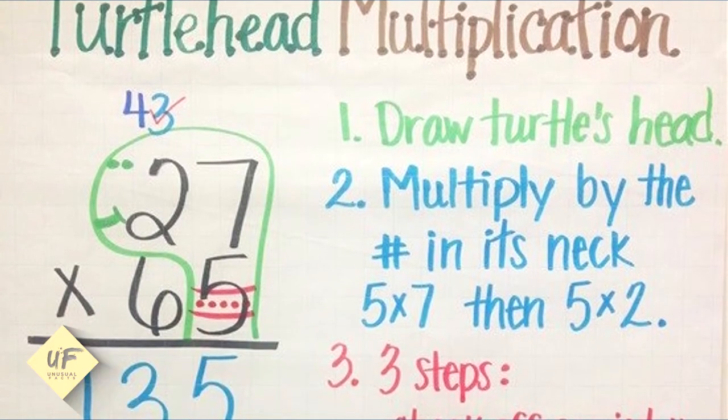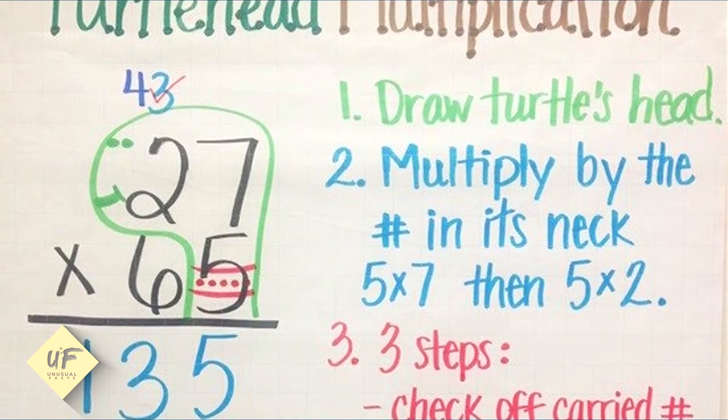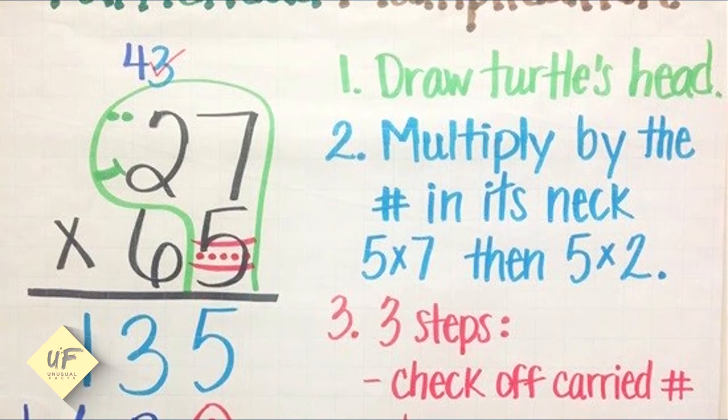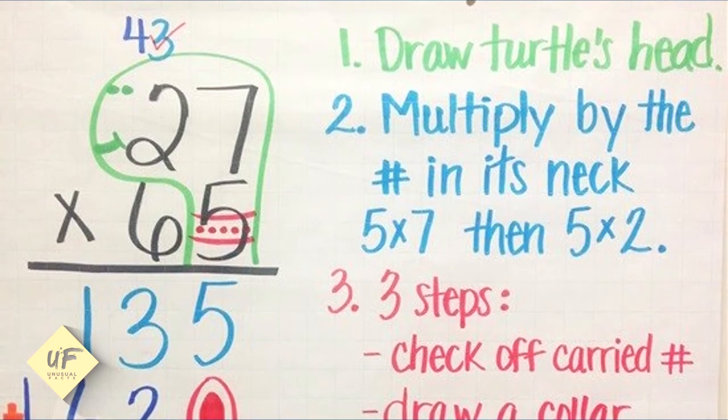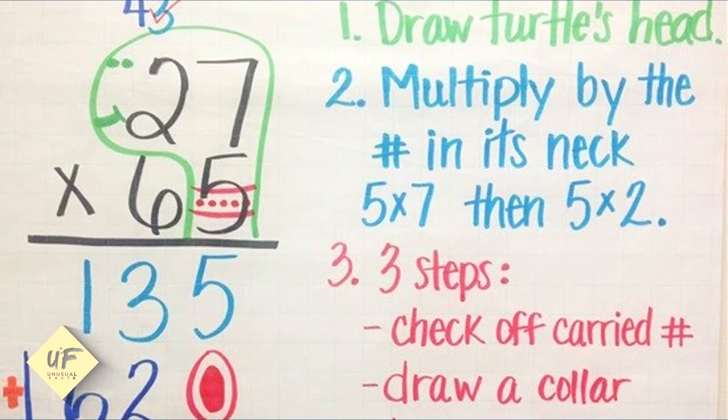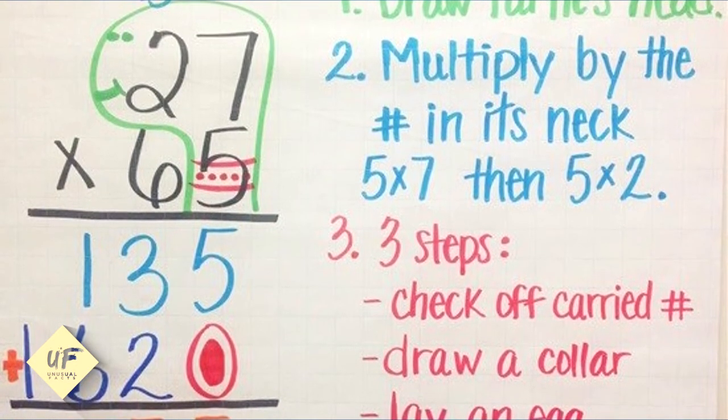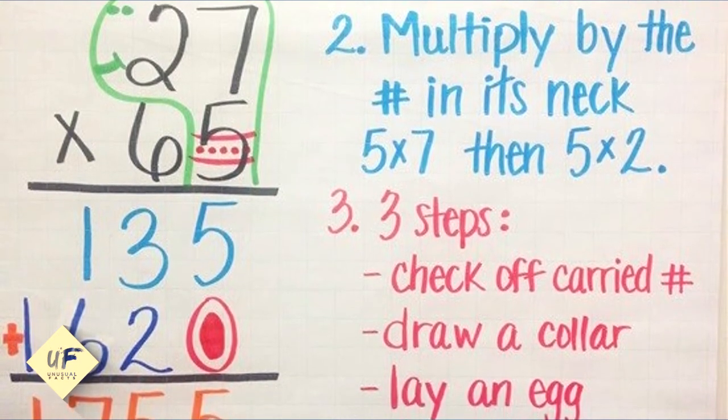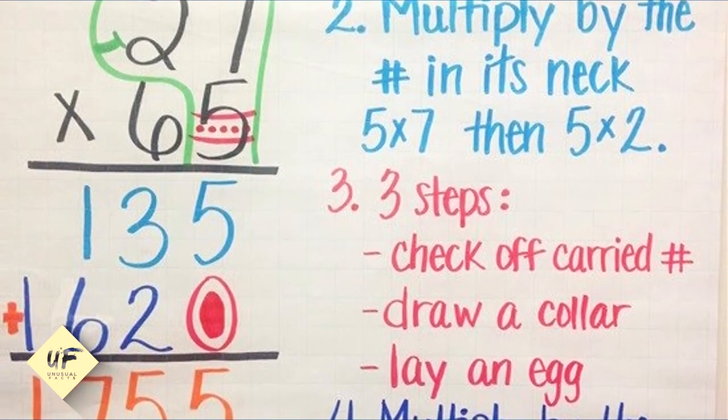Number 9: Turtle Head Multiplication. Have you ever heard of Turtle Head Multiplication? I certainly haven't, but I think I can get this one put together pretty easily. So you have 27 times 65. First, you want to draw a turtle's head. You'll do that around the 5, the 7, and the 2, because those are the numbers you're going to multiply first.